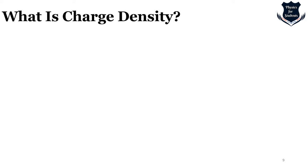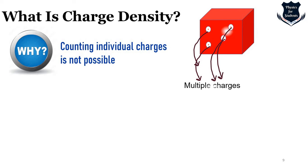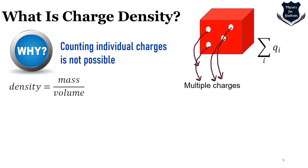We need charge density because we cannot count individual charges — it is not possible. For example, this red cube has multiple charge points. While we could count discrete charges 1, 2, 3, 4 and use a formula to calculate them, in the real world we come across millions and billions of charges across a wire or surface, so counting individually is not feasible.